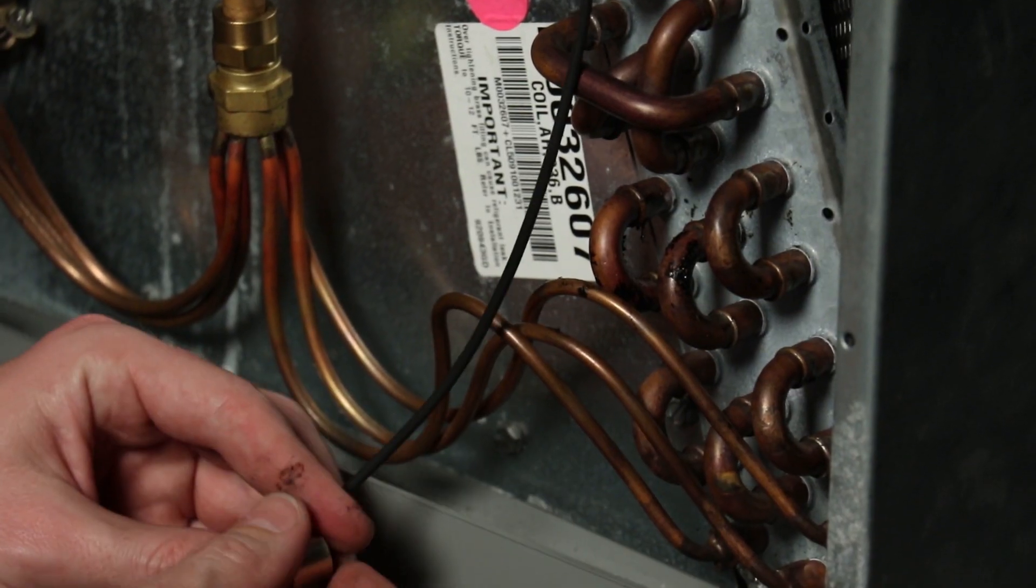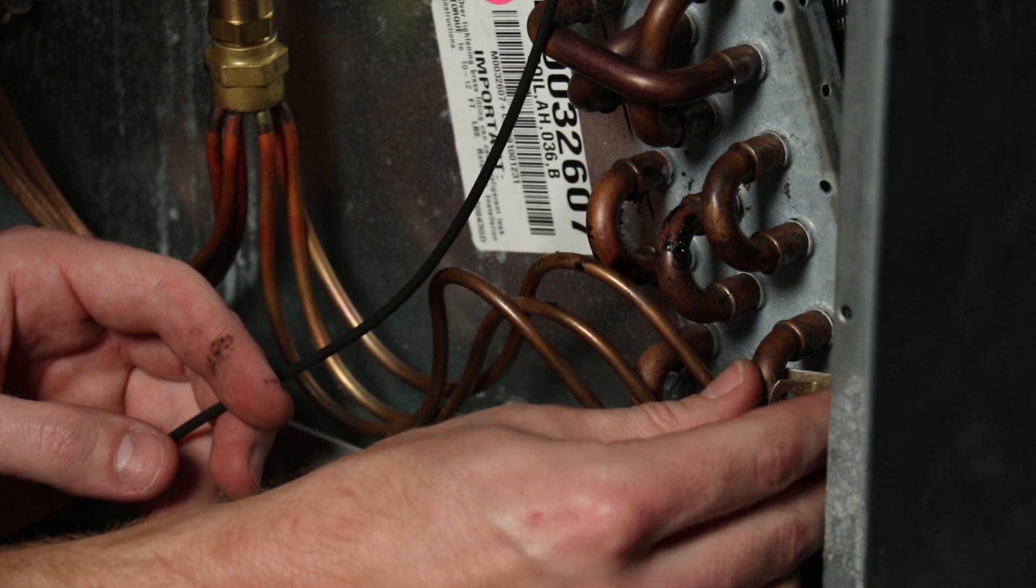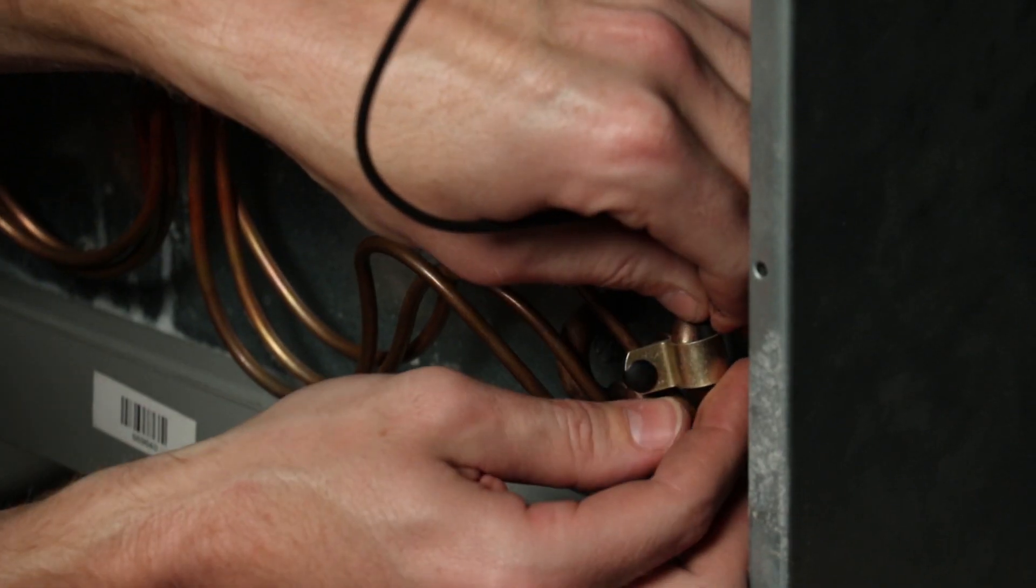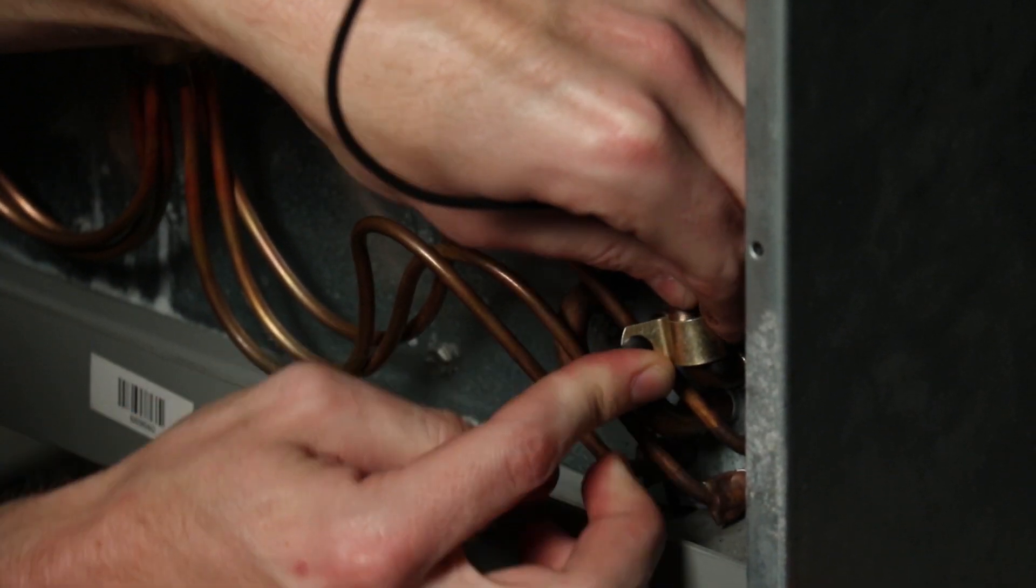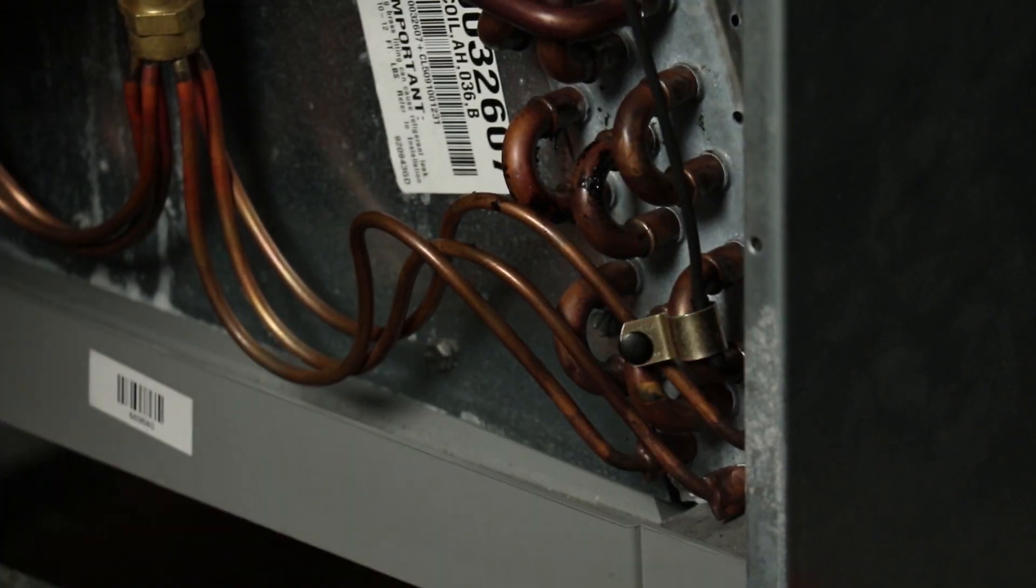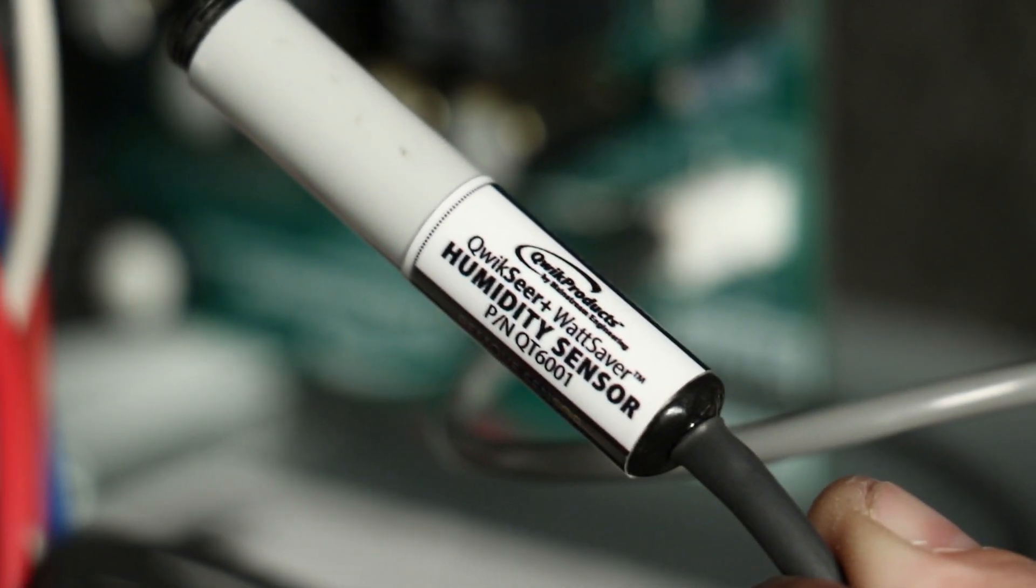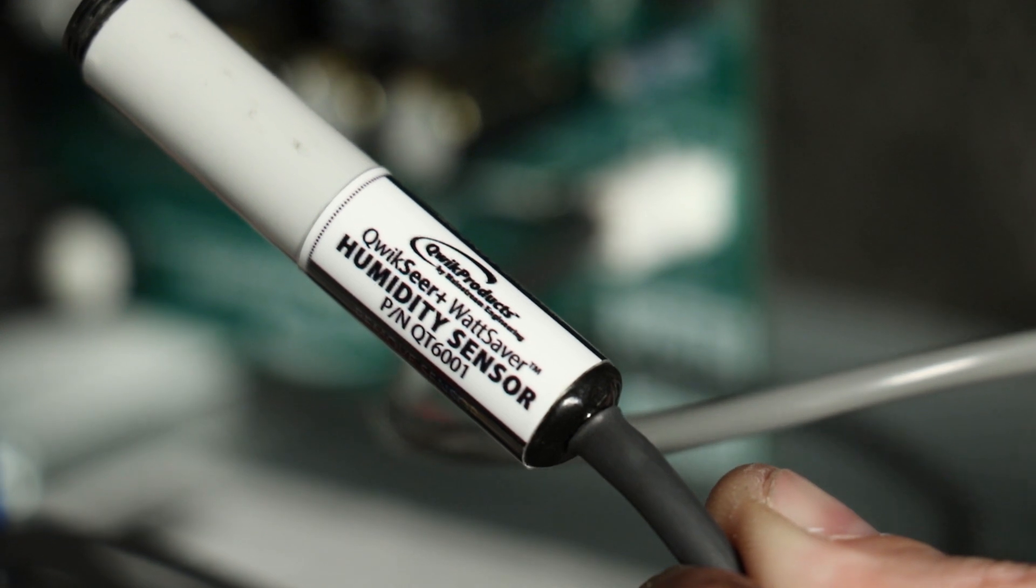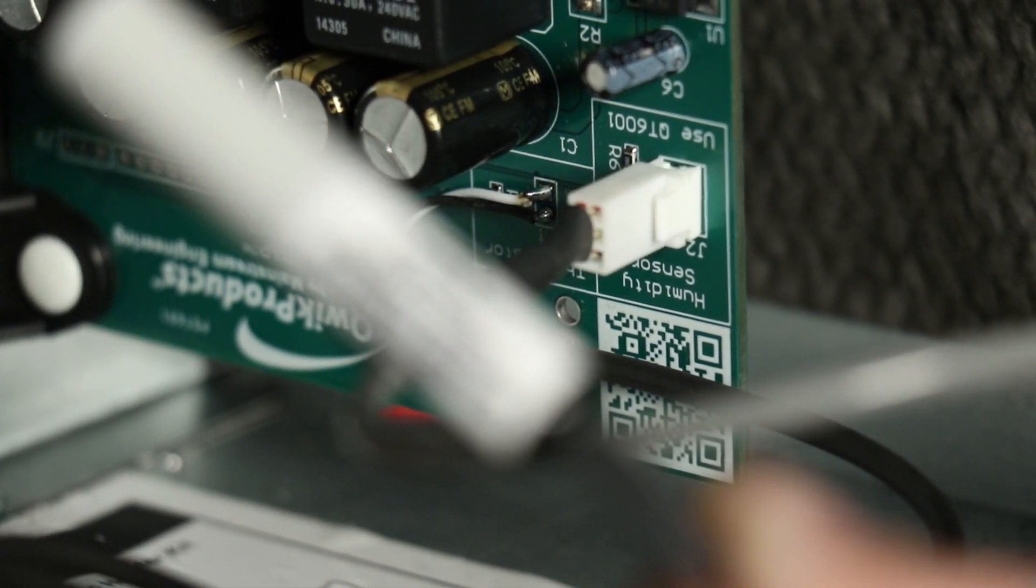Step ten is to route the thermistor from the quick swap board down to the evaporator coil. The thermistor must be installed on any return bend near the coil inlet using the loop clamp provided. If the optional humidity sensor is to be used, install it now following the instructions that it comes with.